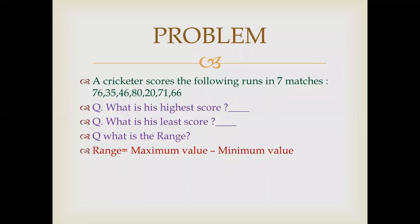Let us solve a problem. A cricketer scores the following runs in 7 matches. Can you tell me what is the highest score? Yes, the answer is 80. What is the least score? The value is 20.